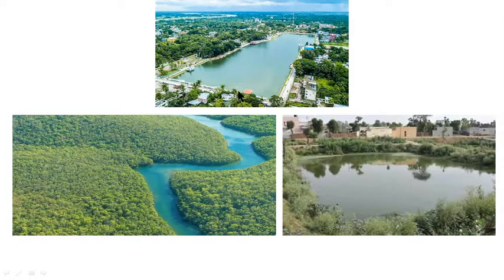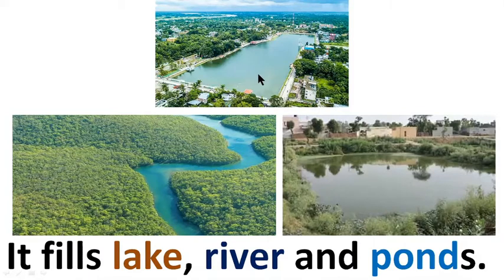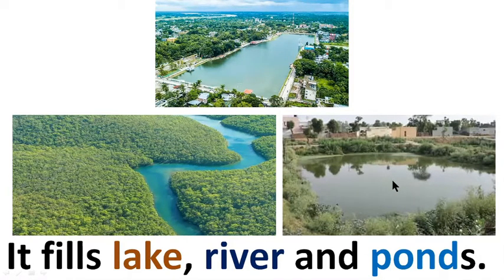There are three pictures here, and it fills lake, river, and ponds — that means water fills lakes, rivers, and ponds. In the first picture, this is a lake, and in the lake there is water. In the second picture we can see a river, and the river is filled with water. In the third picture we can see a pond, and in the pond there is water.